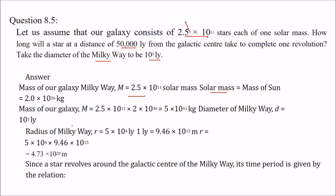Solar mass matlab mass of sun — hum jaante hain aapko value pata hogi: 2 into 10^30 kg. Ab mass jo hamari galaxy ka hai: 2.5 into 10^11 solar mass. Dono ko multiply kar dijiye — yeh mass ho gaya kg mein. Diameter kya hai Milky Way ka: 10^5 light years. Aur 10^5/2 yaani radius — 5 into 10^4 light years. Ek light year hota hai: 9.46 into 10^15 meter. Toh R = 5 into 10^4 into 9.46 into 10^15 — kareeban itni value aayegi.